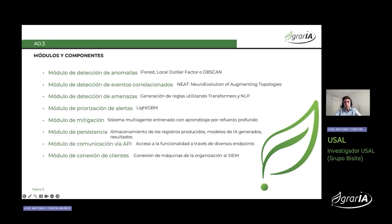Nuestra solución se estructura en base a ocho módulos principales interconectados. El módulo de detección de anomalías utiliza algoritmos como iForest, LocalOutlierFactor o DBSCAN para identificar patrones anómalos en datos de AuditD ejecutándose en dispositivos IoT y servidores Apache. El módulo de detección de eventos correlacionados usa el algoritmo NEAD para descubrir relaciones entre eventos que puedan suponer una amenaza. El módulo de detección de amenazas genera reglas a partir de descripciones de usuario utilizando modelos transformers y procesamiento de lenguaje natural, que después se aplican en la base de datos para identificar posibles amenazas.